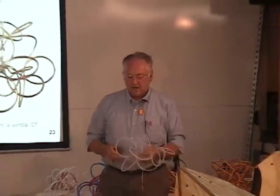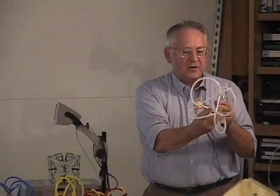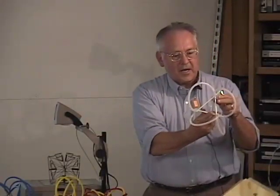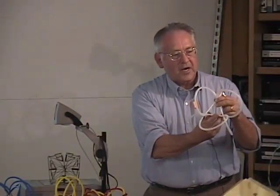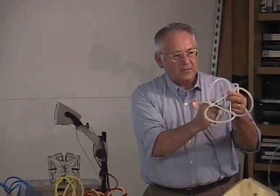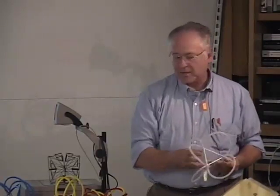The tetrahedron here has four triangular faces. It's no longer symmetrical — it's asymmetrical — and it would take two of them put together like this to become symmetrical again.